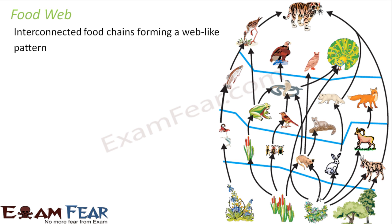Here you can see an example of a food web. Different types of plants are eaten by animals like rabbit, squirrel, and insects. These in turn are eaten by frogs, birds, bigger birds, and cats. Now this frog can be eaten up by a snake, and it can also be eaten by this bigger bird. So the same animal can be eaten up by two different animals. This animal in turn can be eaten up by this tiger, and this snake can be eaten up by this hawk or also by this peacock.